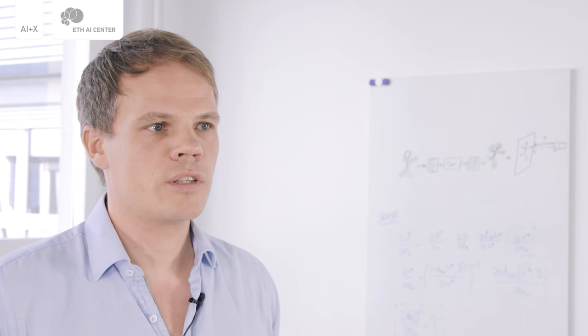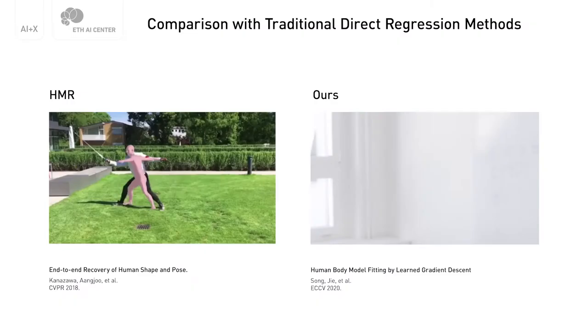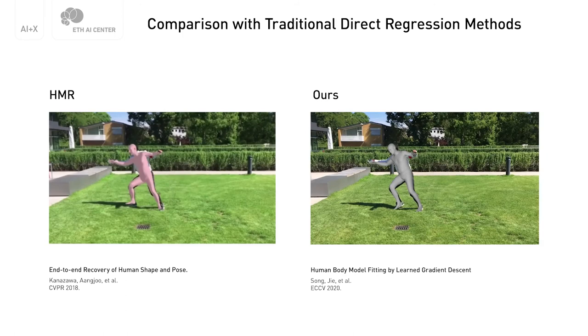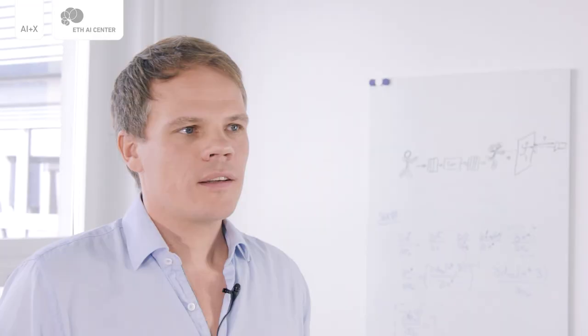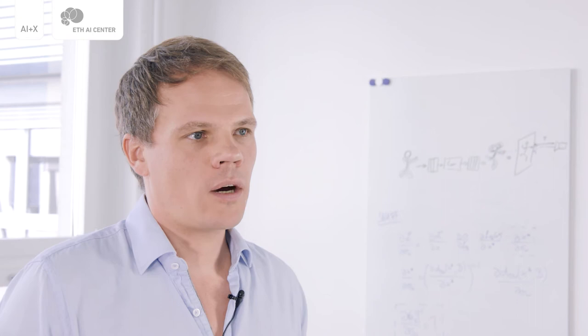For example, in recent work, we've replaced the traditionally handcrafted update rule in gradient descent algorithm with a learned human centric specific update rule. This allows the algorithm to converge orders of magnitude faster and be more accurate than traditional optimization techniques and machine learning based approaches at the same time. These properties in turn allow us to leverage such algorithms and methods in a variety of problem settings.